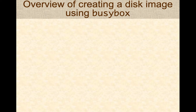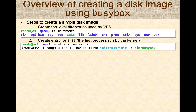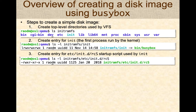Here's a quick overview of how a disk is created using BusyBox. First, you create top-level directories used by VFS on your host operating system — the standard bin, dev, etc, lib, mount, proc, usr, var directories. Then you copy BusyBox into the bin directory and create links to BusyBox — for example, a link to the init program required by the Linux kernel, so init is a link to BusyBox. You also create the RCS entry, which is a simple shell script or startup script.